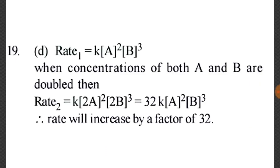When concentrations of both A and B are doubled: rate₂ = k(2[A])²(2[B])³ = 32 · k[A]²[B]³. So the rate will increase by a factor of 32. Option D is correct.